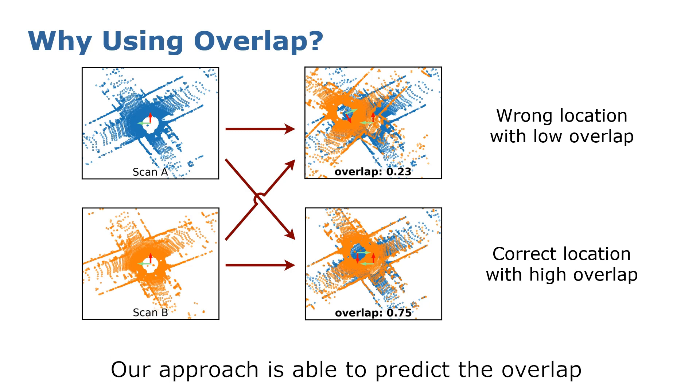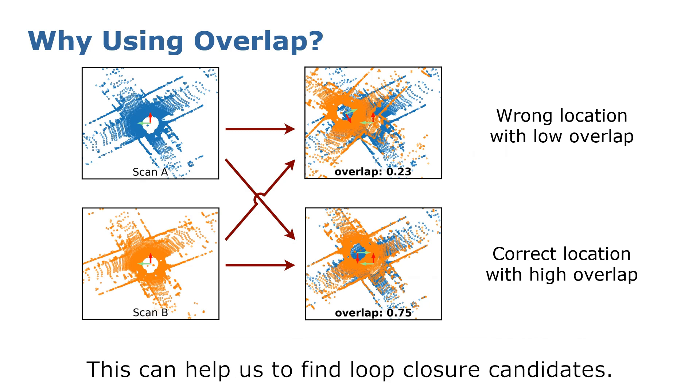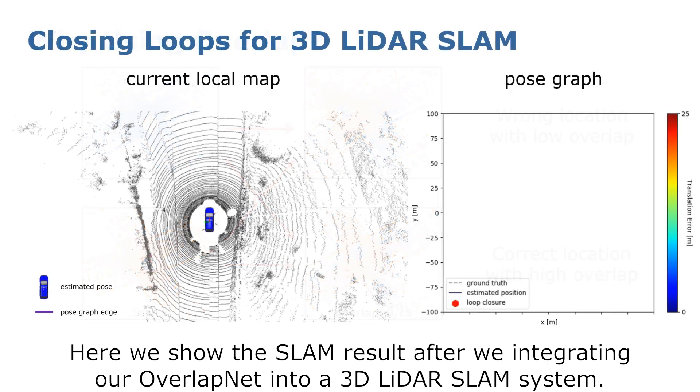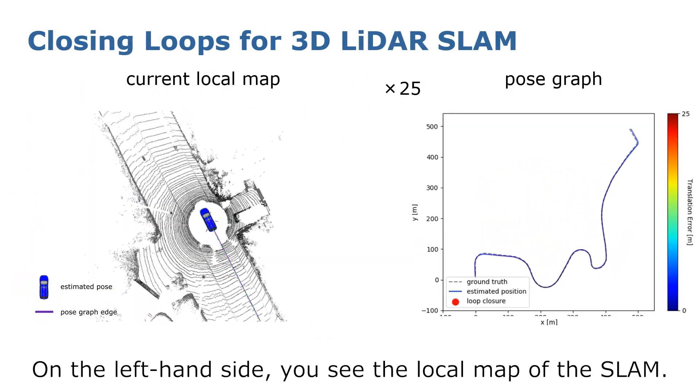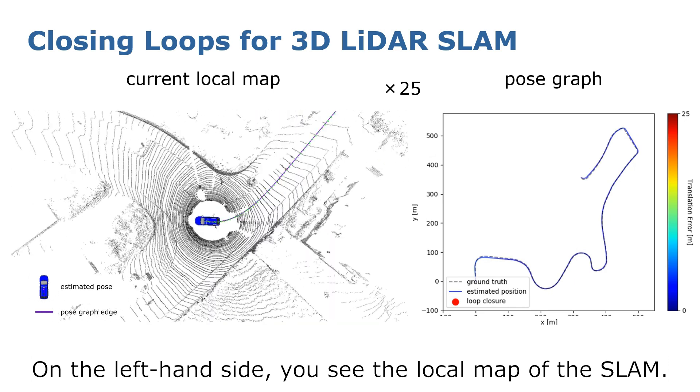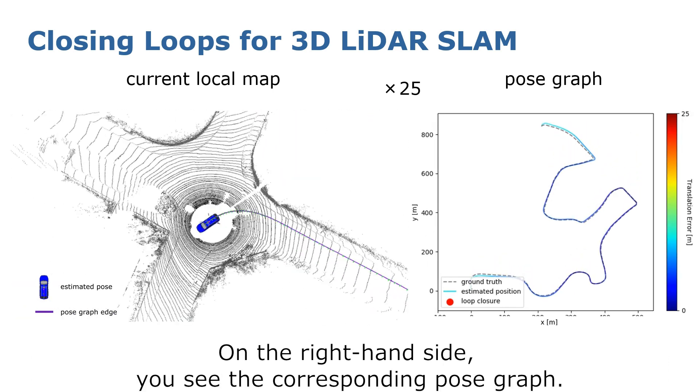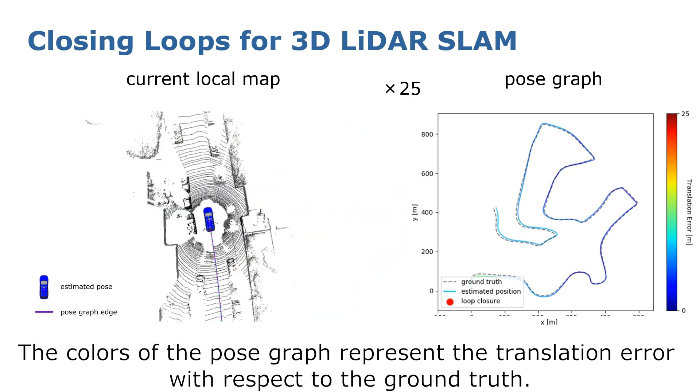Our approach is able to predict the overlap without knowing the relative transformation between the scans. This helps us find loop closure candidates. Here we show the SLAM result after integrating our OverlapNet into a 3D LiDAR SLAM system. On the left-hand side, you see the local map of the SLAM. On the right-hand side, you see the corresponding pose graph.